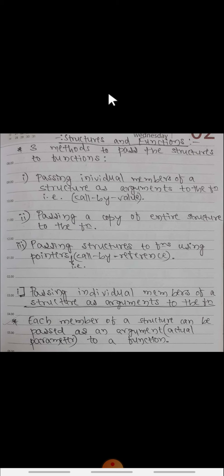Here we are going to pass structures to functions. In call by value, we were passing actual values of arguments to the called function. In call by reference, we were sending or passing the address of variables to the called function. Here instead of sending values or addresses, we are sending or passing the entire structure. Inside the structure, members are there — members of that structure are passed to called functions. To pass these members of structures, there are three methods. The first method is passing individual single members of a structure as arguments to the function definition.